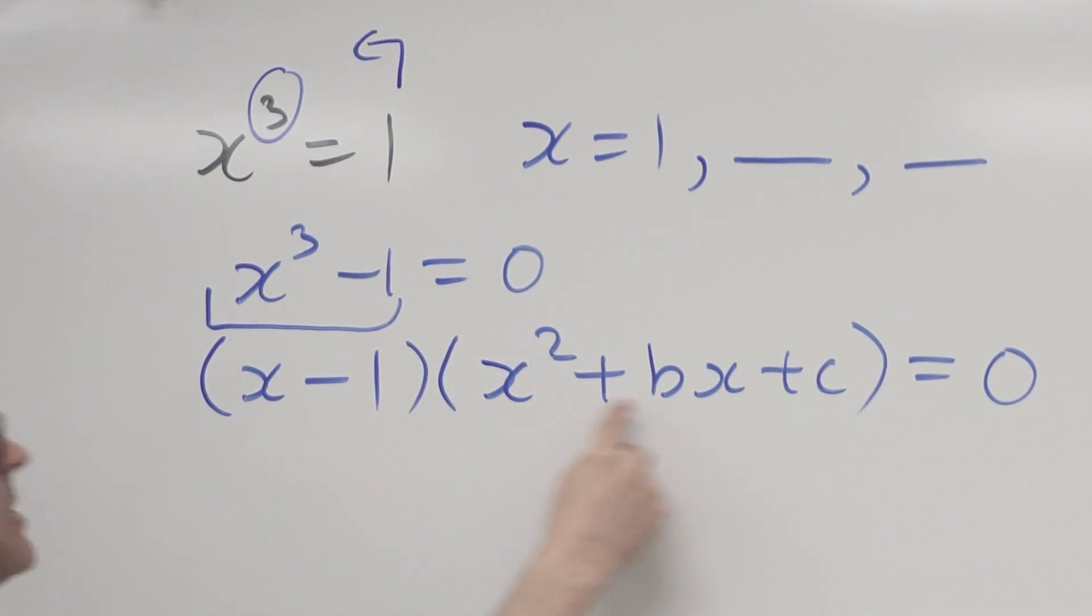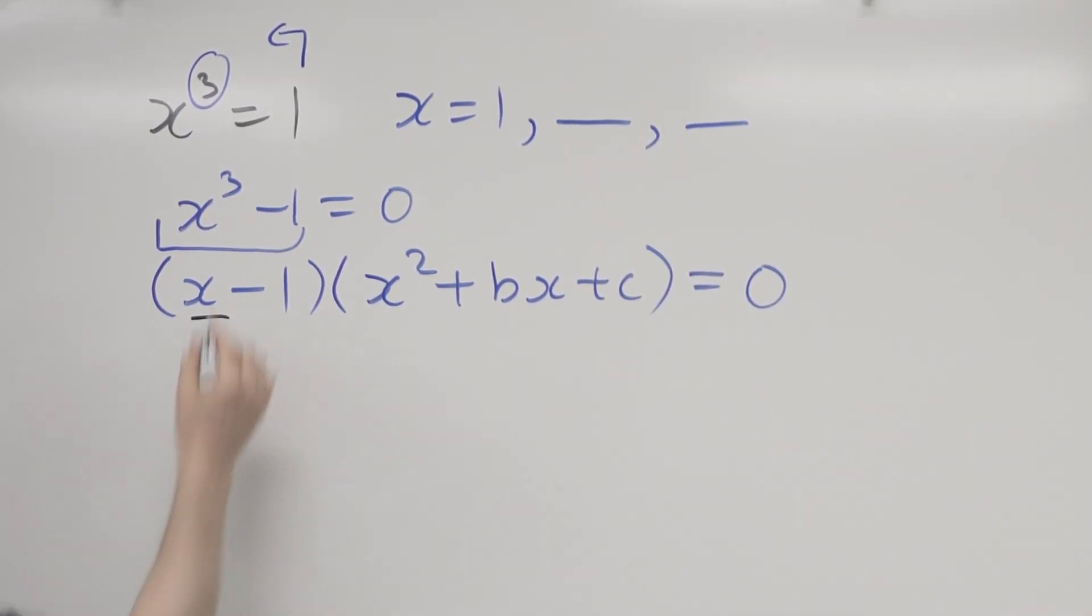So all I'm doing here is I'm rewriting this equation to look like this. And then working backwards to see if I can deduce what b and c would have to be. So I'm going to expand this out. I'm going to bring the x through first. So x is going to come through in each of the terms. And then I'm going to bring the negative one through do you see.